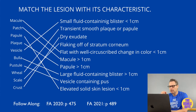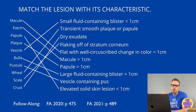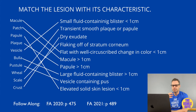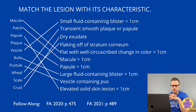A vesicle and bulla are essentially the same thing — fluid-filled blisters — except the vesicle is less than one centimeter and the bulla is greater than one centimeter. Then we have a pustule, which is a vesicle that contains pus. Any pus-containing lesion can be a pustule. A wheal is a smooth plaque or papule — think of an allergic reaction that causes hives, those red marks all over someone's arms and body.